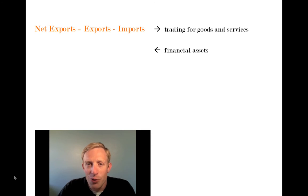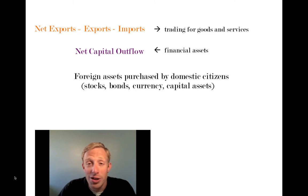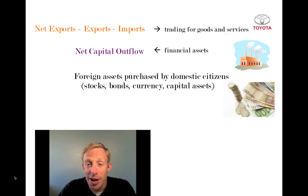The financial side of things is referred to as net capital outflow. And that is the foreign assets that domestic citizens purchase. By assets, we mean things like stocks and bonds and currency. So if you're in the United States and you're a U.S. citizen, all the stock that you buy in Toyota, or the euros that you purchase, or the bonds of Germany, you buy those things. Those aren't products, those are financial assets. And those are added positively to what we call the net capital outflow, or the NCO.